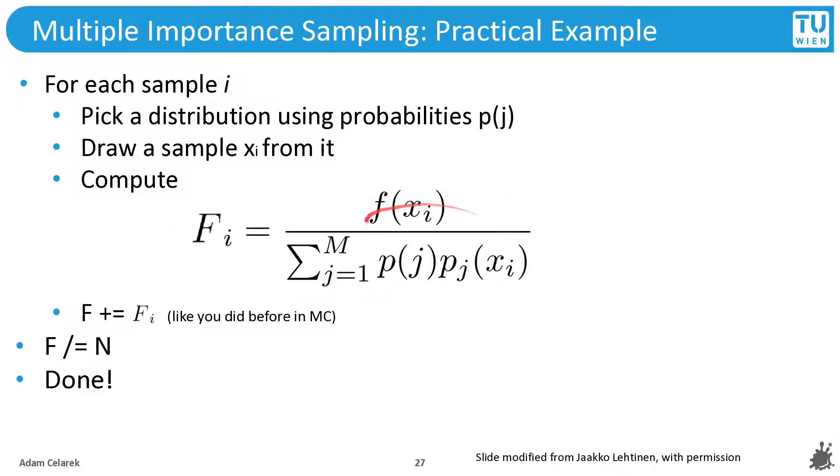We compute this value, which is the estimator for the current sampling strategy. And the balance heuristic is already built in. Then we sum up, like we did before in Monte Carlo. We divide by the number of samples and we are done.